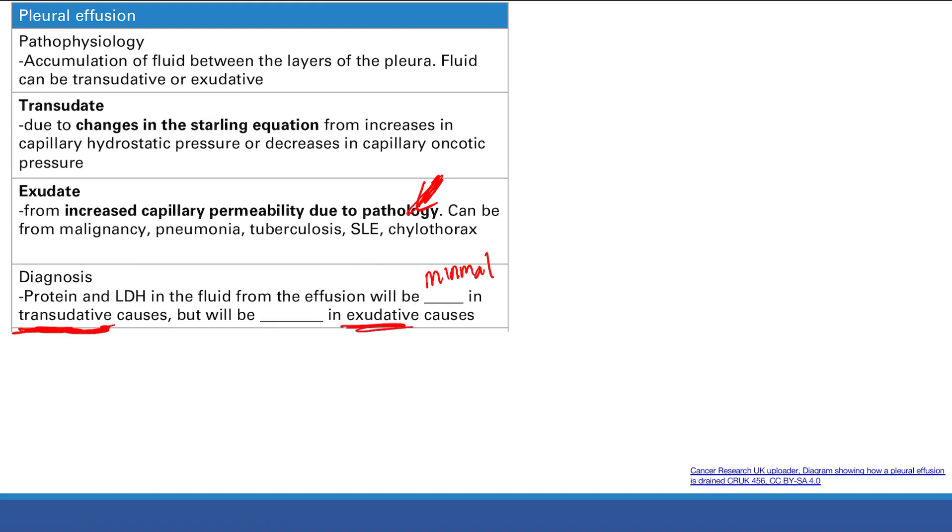thanks to the Starling equation. On the other hand, in the exudative case, what's going to be the protein and LDH levels? Now, remember the whole problem with exudative problems is you have an increased capillary permeability.